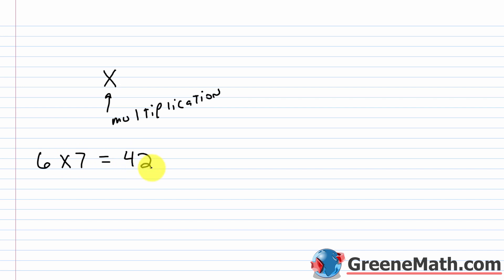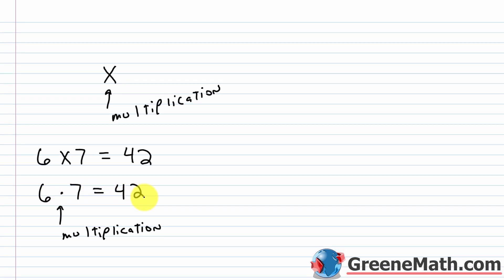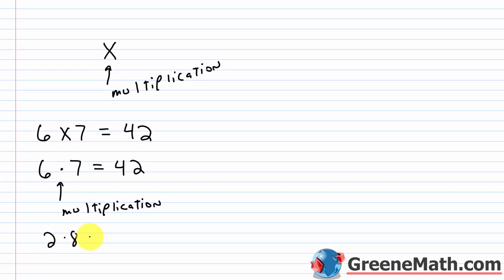As you move higher in math, this symbol is going to go away. You're going to use some other method. Earlier in the course, we talked about a number being next to parentheses implying multiplication. But primarily, what we're going to use is a dot. So if I wanted 6 times 7, I could write it with a dot — this symbol also means multiplication. So 6 · 7 = 42, or 2 · 8 = 16. I'm just replacing the familiar × symbol with this new dot.